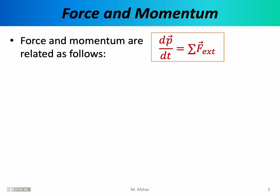We've been talking about momentum over the last few lectures, and the connection between momentum and velocity should be obvious to you. After all, momentum is defined as mass times velocity. But of course, velocity is related to acceleration, and acceleration is related to force, so it shouldn't be any surprise that momentum and force are related. The rate of change in momentum with respect to time is equal to the net external force acting on the system. Whenever a system is under a net external force, its momentum is going to change, and this equation tells us precisely how that momentum is going to change.